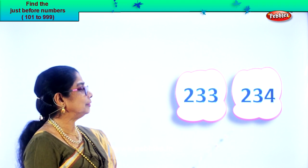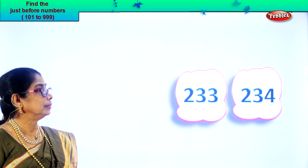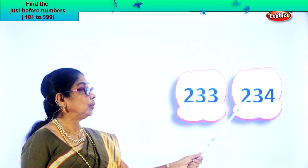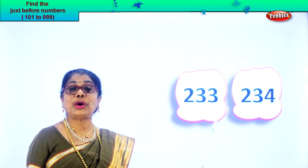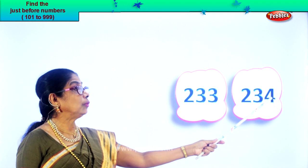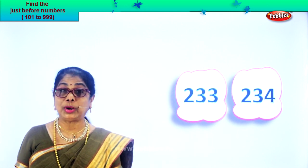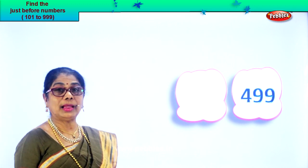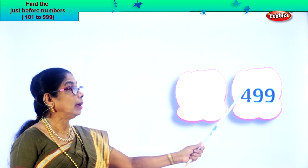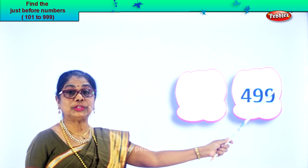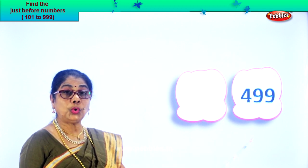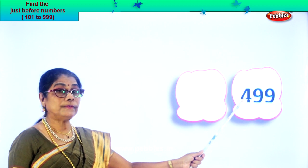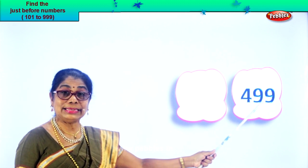Look what you have. So 233, 234 — we found the number before by looking at the ones place. Let's go to the next. Hundreds, tens, ones place. You have 499. How do you read? 4, 99.